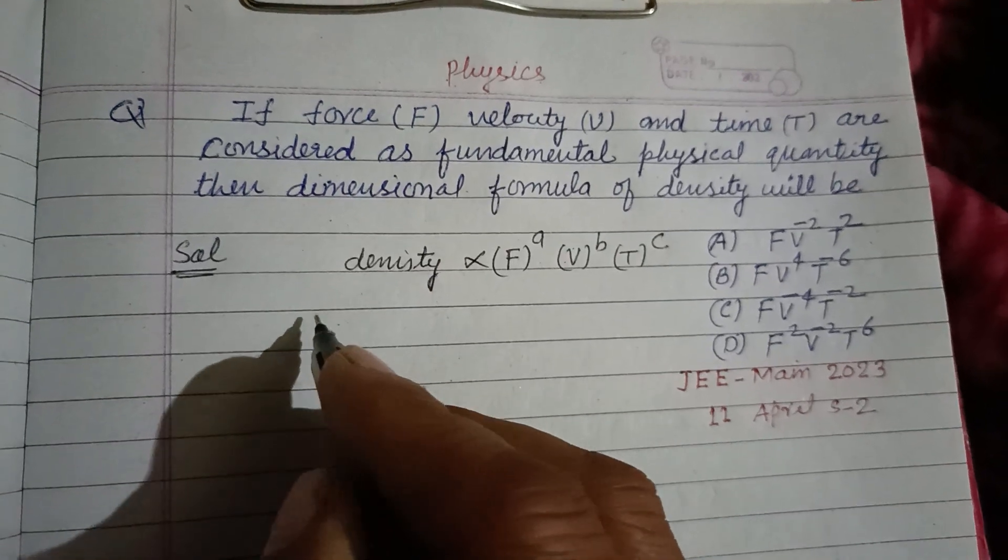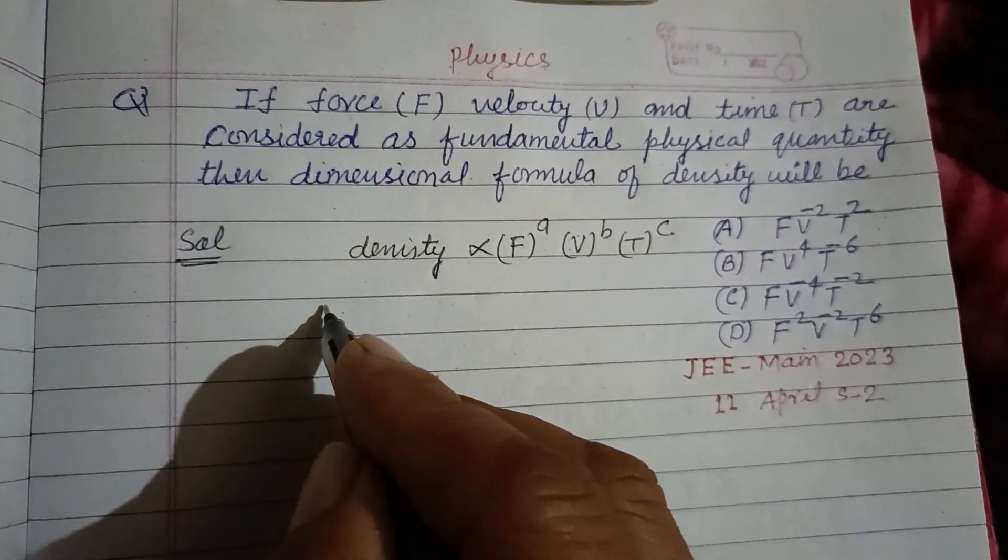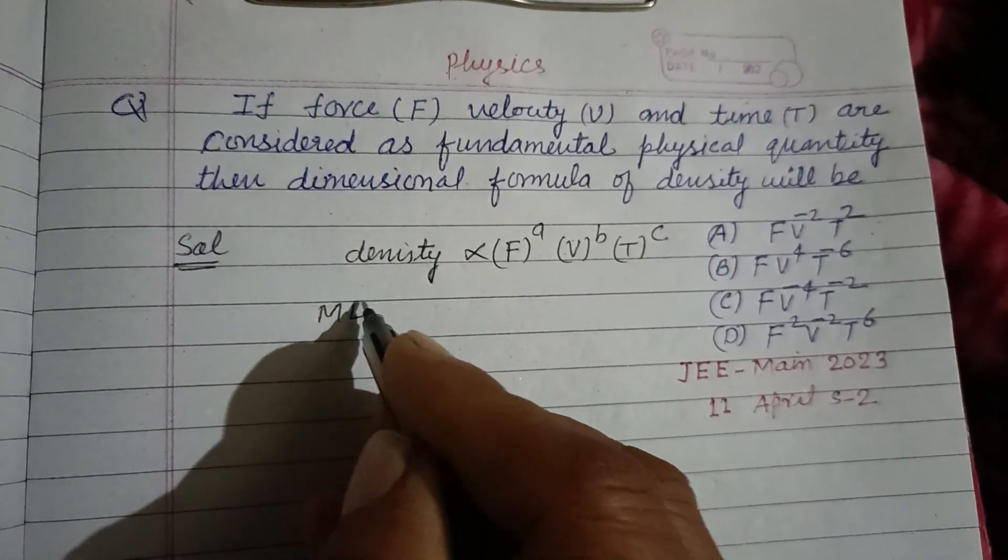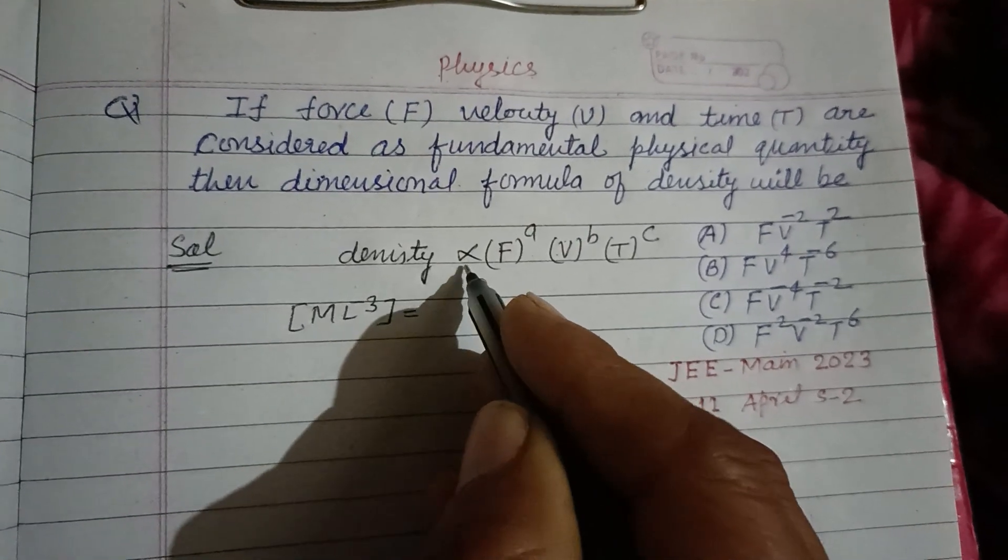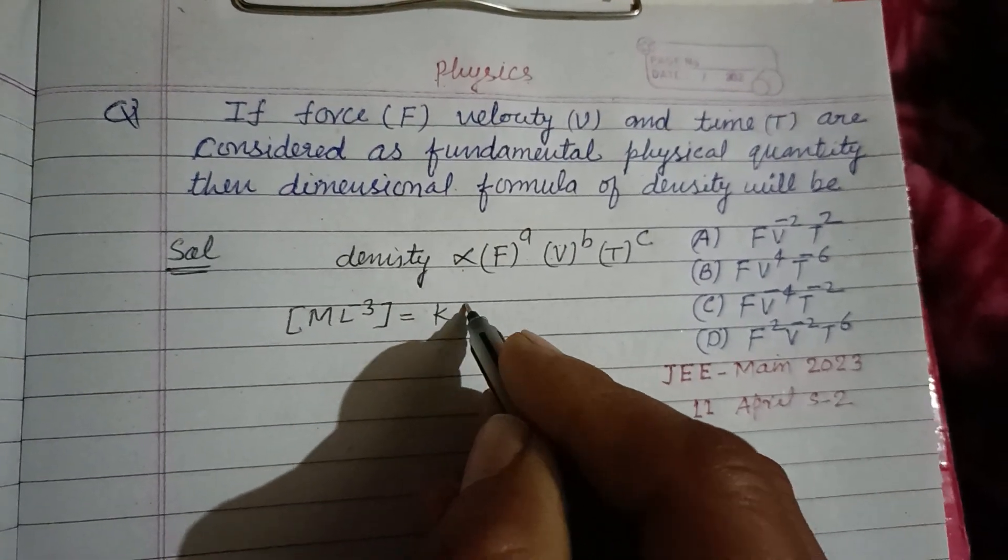So writing dimensions on both sides, density is mass over volume. So this is ML^-3 and removing proportional, we take a constant K.